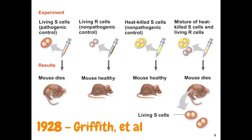The virulent S strain had a smooth polysaccharide capsule that protected the cells from being killed by the immune system, and as a result caused pneumonia in mice. The R strain didn't have that capsule and did not cause pneumonia because the immune system could break down those bacterial cells. We didn't know exactly what was being broken down, but now we do — and that's what we'll discuss.